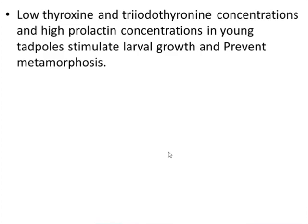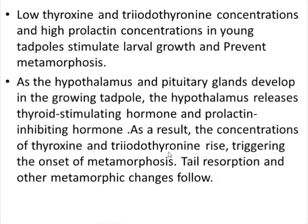When there is low concentration of thyroxin and triiodothyronine and high prolactin concentration in young tadpoles, it stimulates larval growth and prevents metamorphosis. As the hypothalamus and pituitary gland develop in the growing tadpole, the hypothalamus releases thyroid-stimulating hormone and prolactin-inhibiting hormone. As a result, thyroxin and triiodothyronine concentrations increase while prolactin decreases, causing metamorphosis. Changes during metamorphosis include tail resorption, growth of front legs, growth of a larger mouth, loss of gills, and formation of lungs.